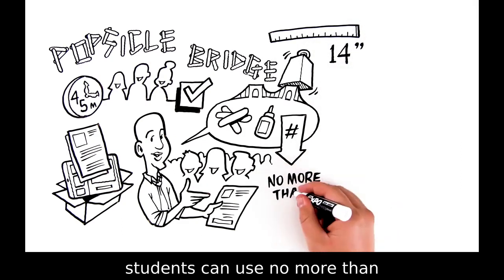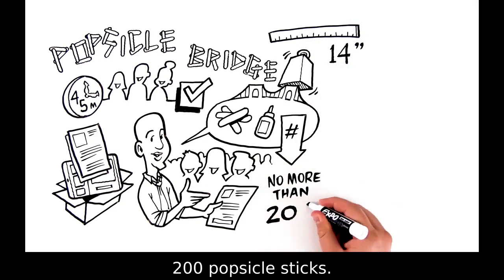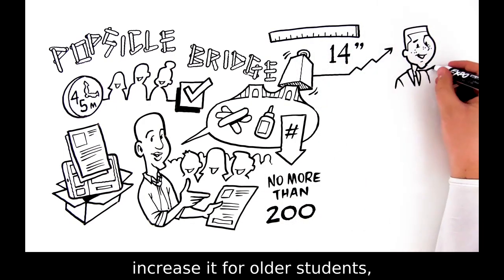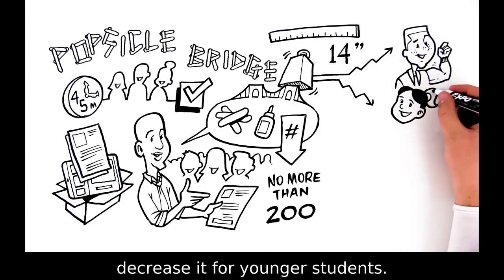When building the bridge, students can use no more than 200 popsicle sticks. The weight the bridge must hold can vary. Increase it for older students, decrease it for younger students.